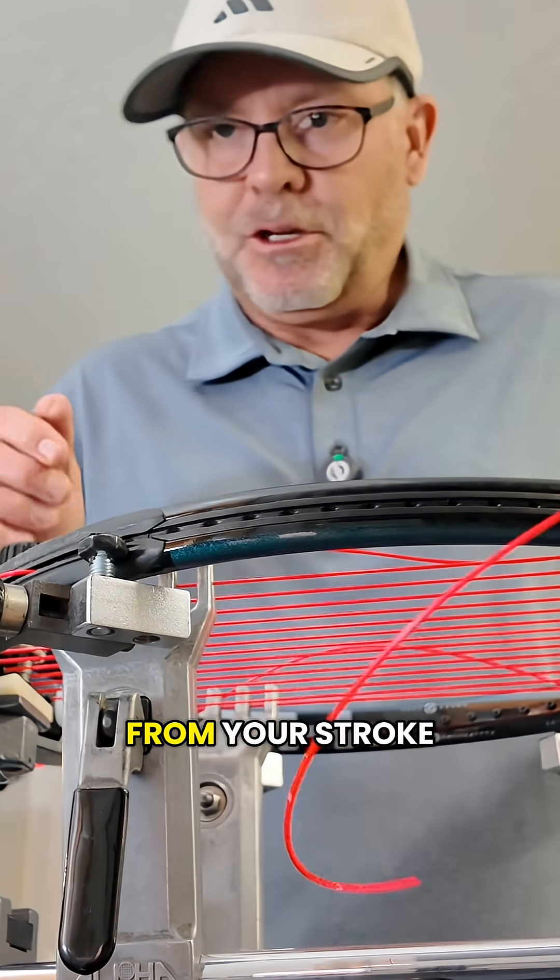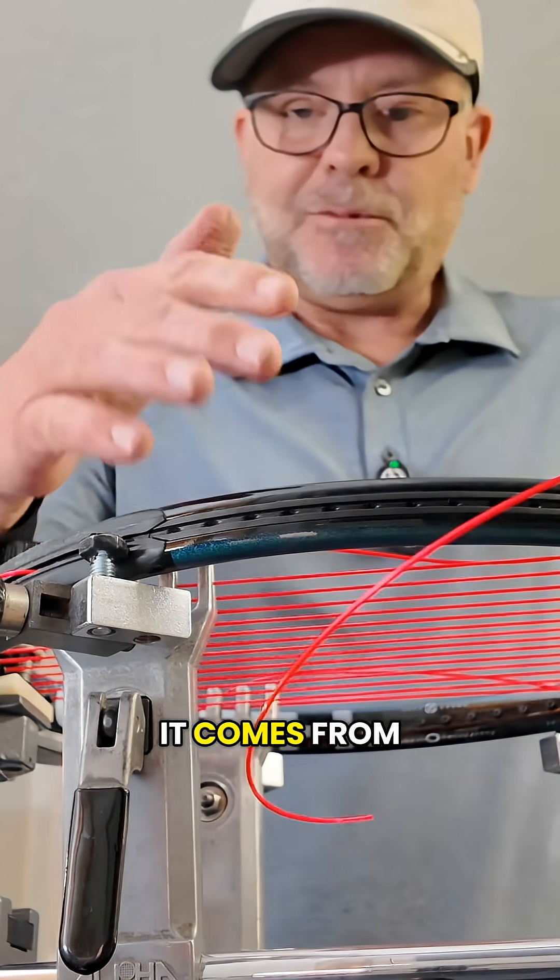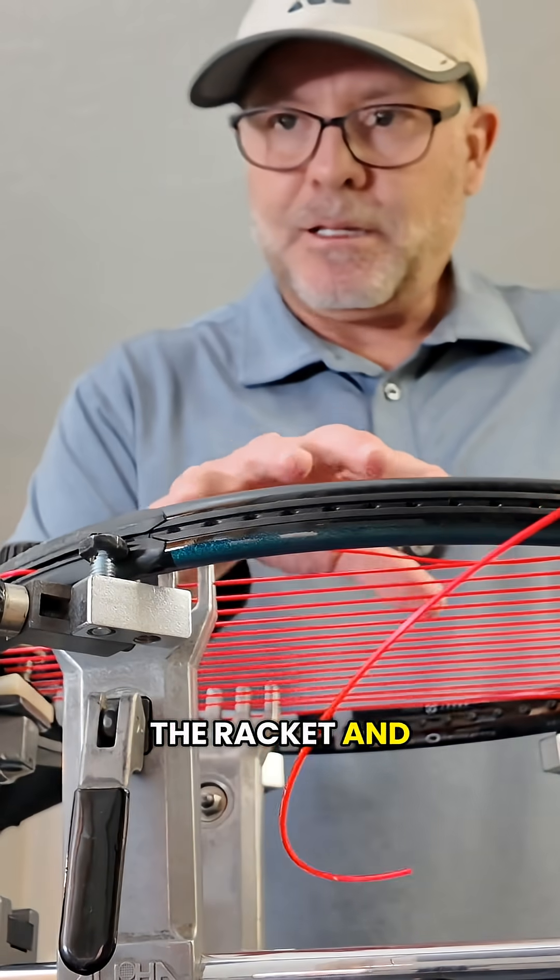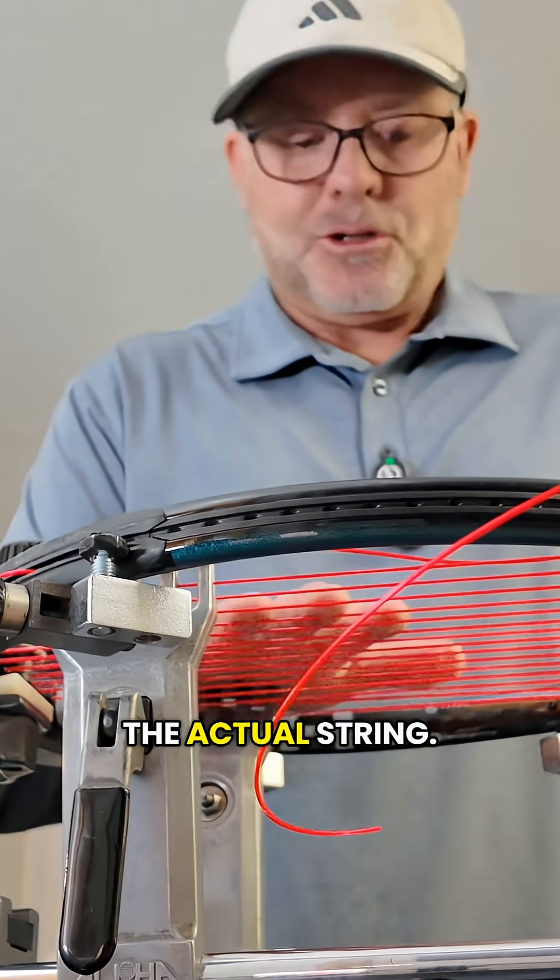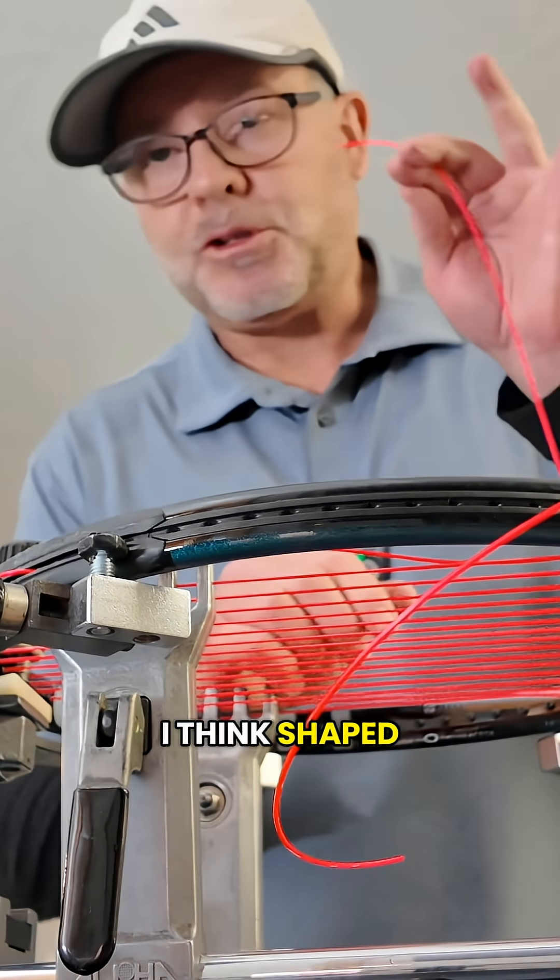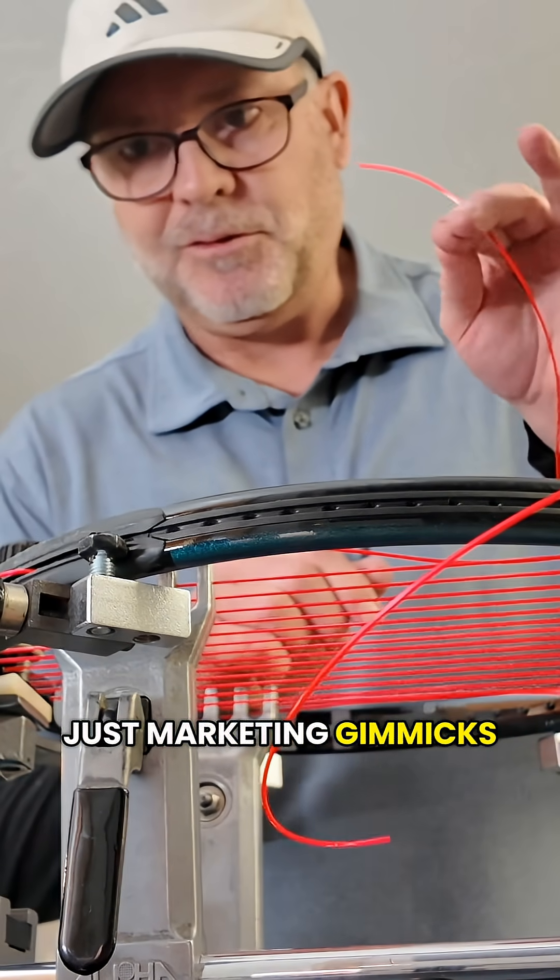Your spin comes from your stroke mechanics. It comes from the racket and the string pattern. The actual string, I think shaped strings generally are just marketing gimmicks for the most part.